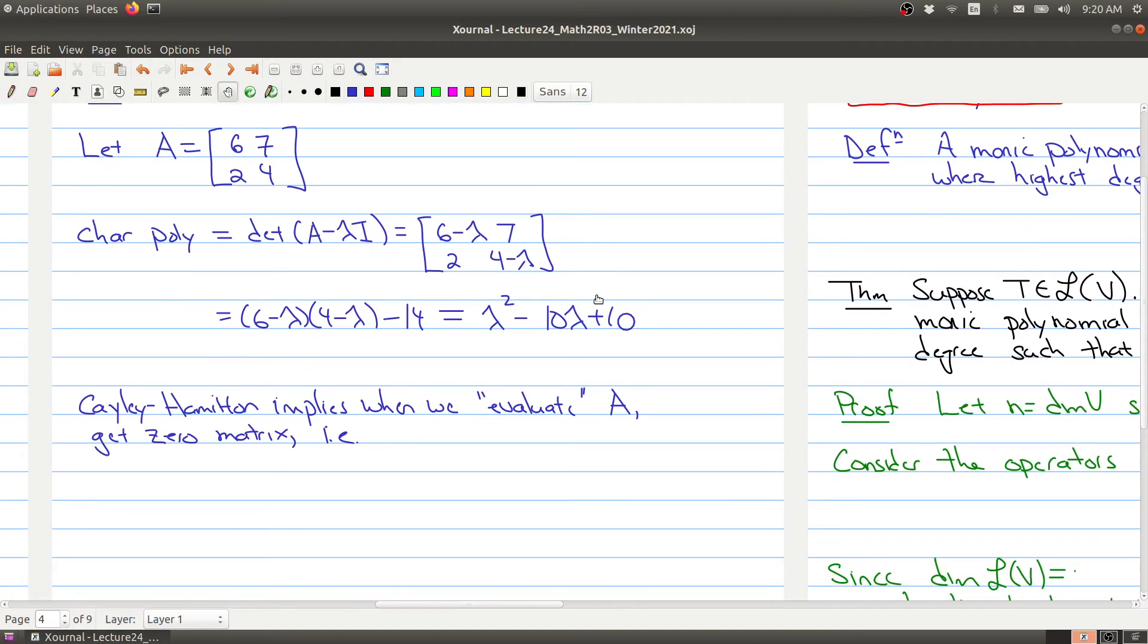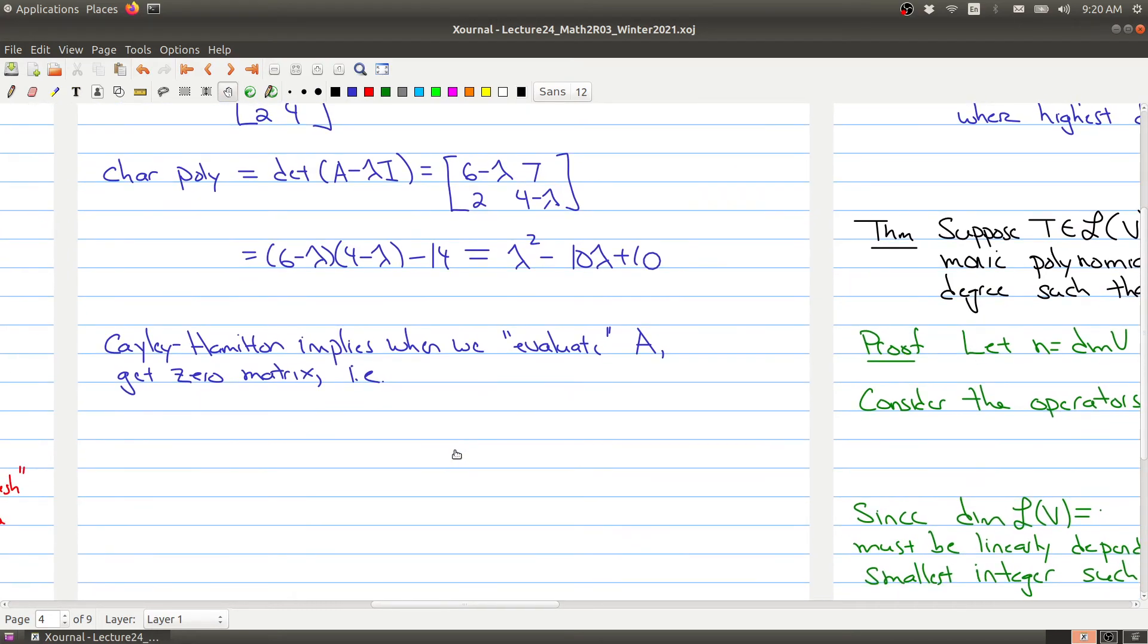The Cayley-Hamilton theorem implies that if we evaluate the matrix A at this polynomial, we get the zero matrix. So if we take the matrix [6,7; 2,4] squared, subtract 10 times the matrix [6,7; 2,4], and add 10 times the identity matrix [1,0; 0,1], when you expand it all out, you get the zero matrix [0,0; 0,0]. That's what the Cayley-Hamilton theorem is doing.